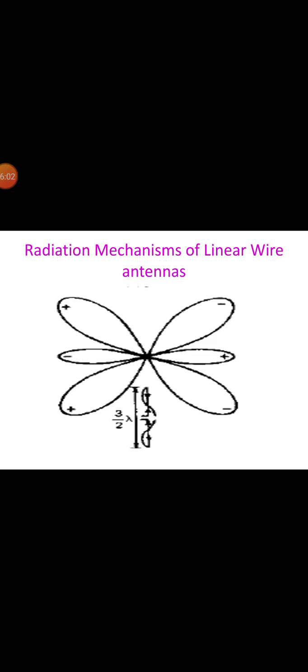In all three cases, the space pattern is a figure of revolution of the pattern shown around the axis of the antenna. The radiation mechanism of a linear wire antenna and the field at any distance from the center-fed dipole can be found by considering the diagram. The geometry for the field at point P from a symmetrical center-fed dipole of length L with sinusoidal current distribution is shown in this figure.